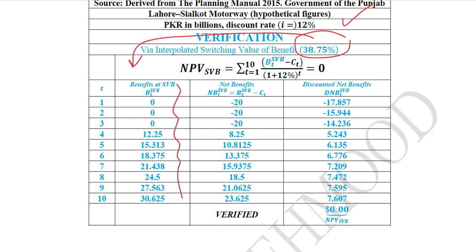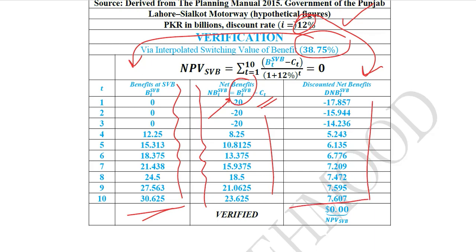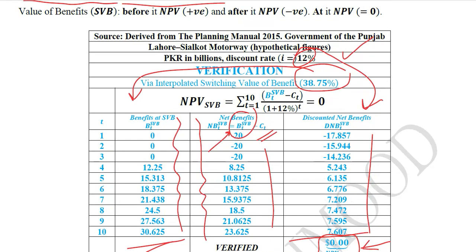Here the decline in the benefits is 38.75%. The net benefits are calculated using the new benefits and the old costs — and in sensitivity analysis we only change one variable at a time, so only the benefits are changed. Then we discount at 12% to get the discounted net benefits column. When we sum all these discounted net benefits, we get an NPV of 0 at the switching value of benefits, which confirms that at the switching value of benefits the NPV equals 0. So the switching value of benefits we found is verified.